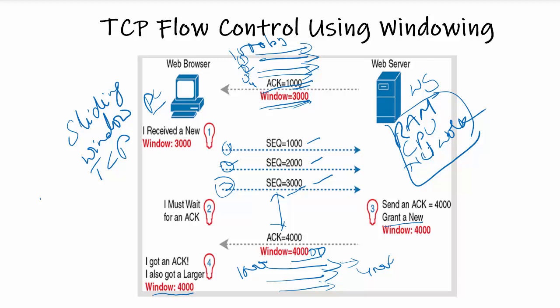In TCP, unordered packets — for example packets one, two, and three sent as one, three, two — are reordered as one, two, three at the receiver end. This does not happen in UDP. Applications that use UDP are tolerant of lost data or they have some application mechanism to recover lost data. For example, VoIP uses UDP because if a voice packet is lost, by the time the loss is noticed and the packet retransmitted, too much delay would occur and the voice would be out of sync.